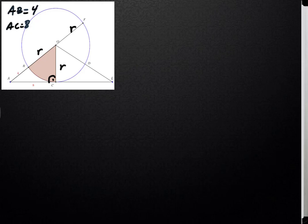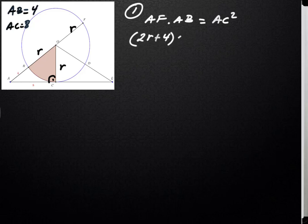We have two methods we can use here. We are going to first use the tangent-secant theorem and find the value of r as a first method. So we can say that AF times AB is equal to AC squared. This is the tangent-secant theorem we are just using. We showed it in another video. So if we plug in the values, what is AF? According to our figure, it's 2 times r, the diameter, plus 4, and then times AB is equal to 4, is equal to 8 squared.